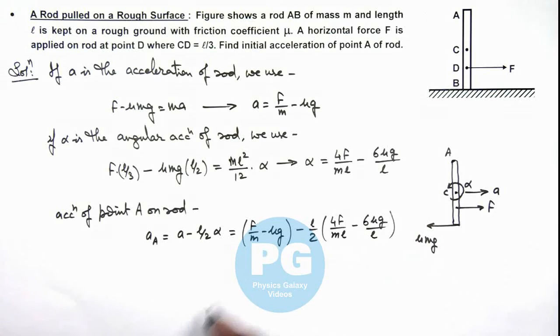Now, if we simplify these relations, you'll finally get the value of acceleration of A is equal to 2μg minus F by m. That is the result of this problem.